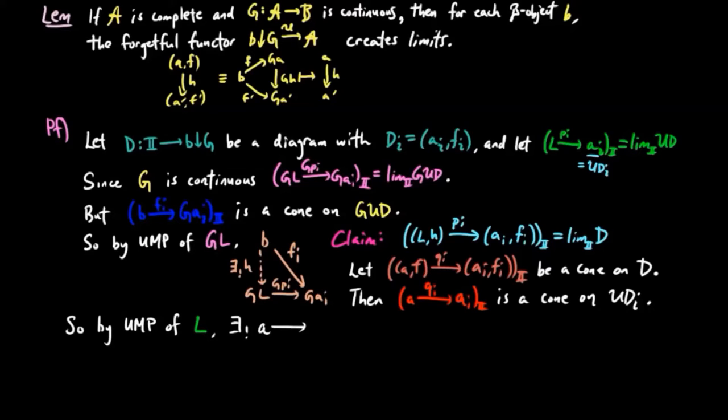So by the universal mapping property of L, there exists this unique morphism K from A to L, such that for all I, PIK is equal to QI.